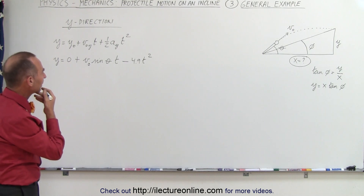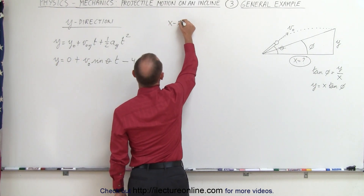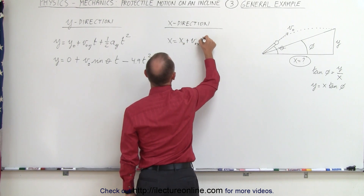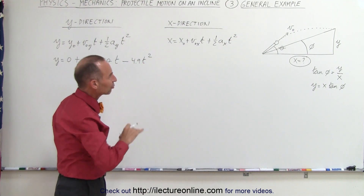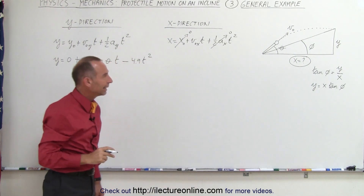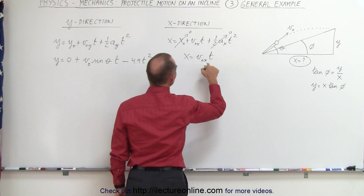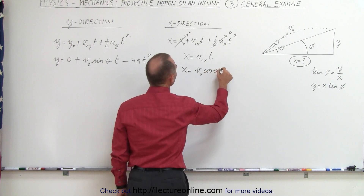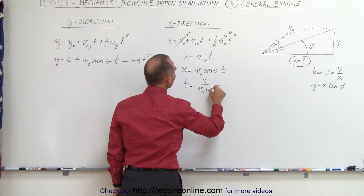Next, let's work with the x direction equation: x equals x-naught plus v-naught in the x direction times time plus one-half a in the x direction times time squared. There are no forces in the x direction, so acceleration is zero, and the initial x distance is also zero. This leaves x equals v-initial times the cosine of theta times t, or equivalently t equals x divided by v-initial times the cosine of theta.